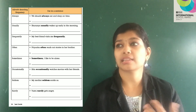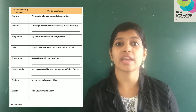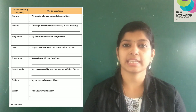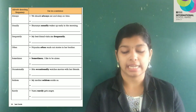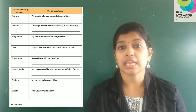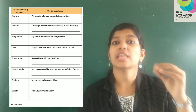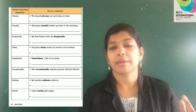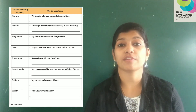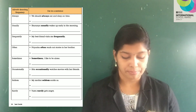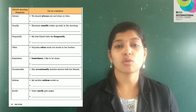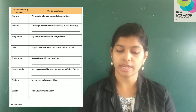For example, if mother is asking what happened to Sharanya — she didn't wake up early today, but usually she wakes up early every day. Most of the time she wakes up early. Now, frequently — my best friend visits me frequently, meaning from time to time, without much gap, maybe once or twice a week. Often means most of the time. Example: Priyanka often reads out stories to her brother — she doesn't do it daily, but most of the time she reads stories to her brother.